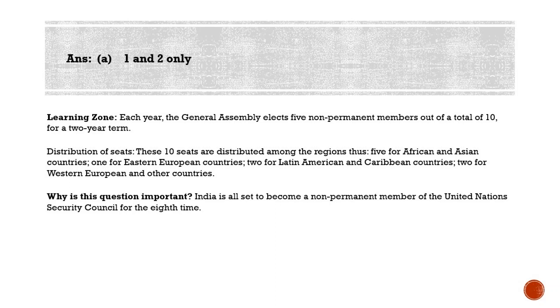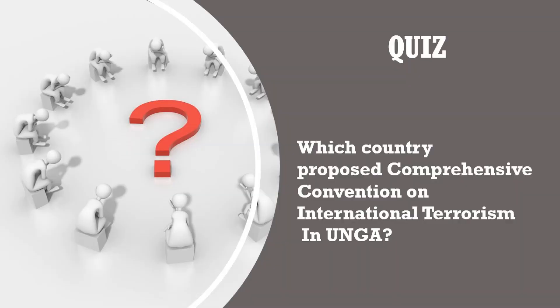Now it's time for a quiz question. There is a Comprehensive Convention on International Terrorism proposed in the United Nations General Assembly. This treaty intends to criminalize all forms of international terrorism and deny terrorists their finances and supporters access to funds, arms, and safe havens. The question is: which country proposed the Comprehensive Convention on International Terrorism in the United Nations General Assembly? Please post your answers in the comment section.